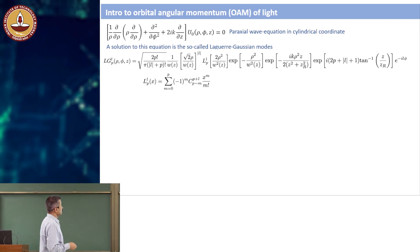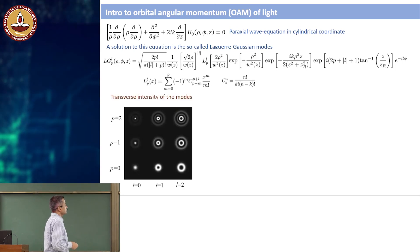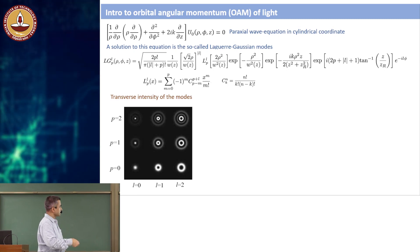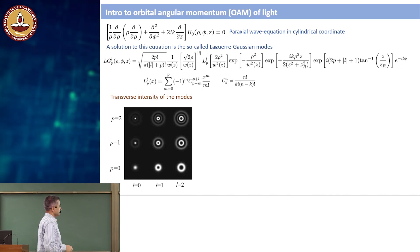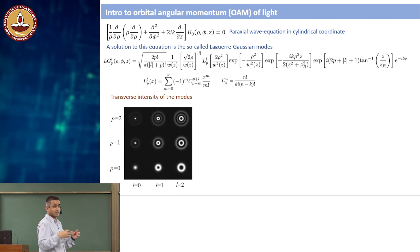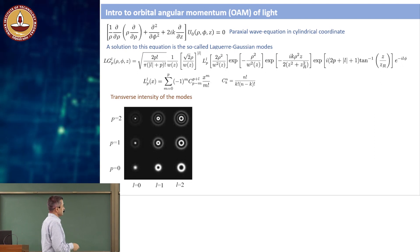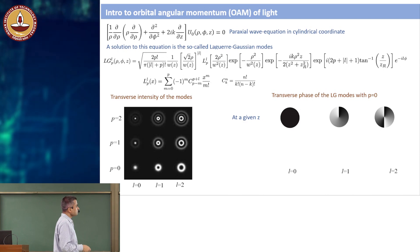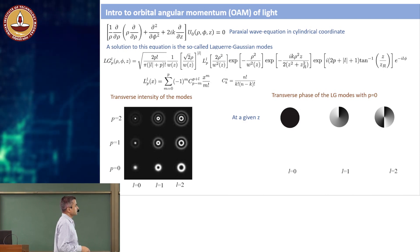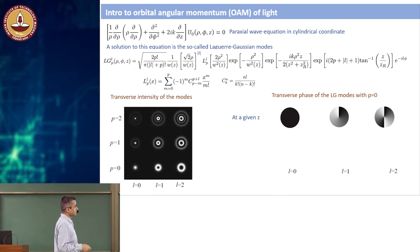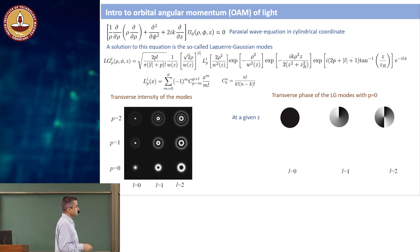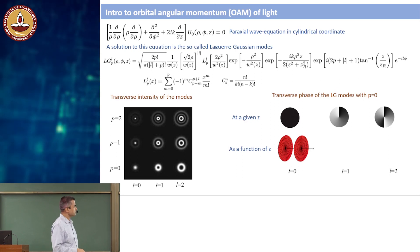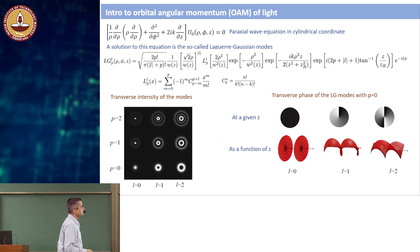Looking at the intensity of these beams for different P and L values: L=0, P=0 is a Gaussian mode — the transverse profile of a laser pointer is very close to this. At P=0, increasing L gives a donut or vada mode, and as L increases it becomes a bigger donut. Increasing P adds more rings. Looking at the phase profile for P=0: L=0 has a flat phase, L=1 changes by 0 to 2π in one rotation, L=2 changes by 0 to 4π. As a function of z, L=0 stays flat, L=1 makes a helix, L=2 makes a double helix.